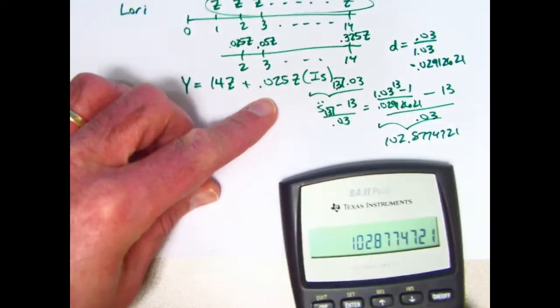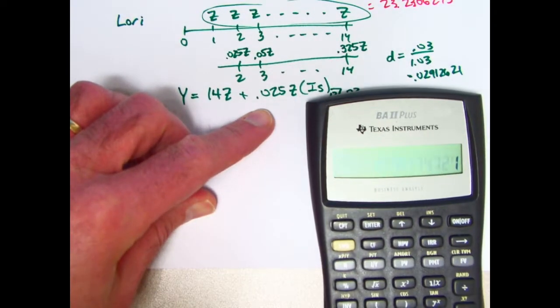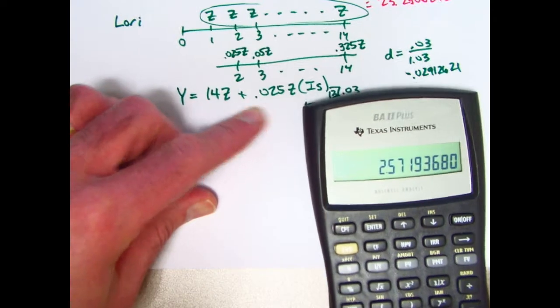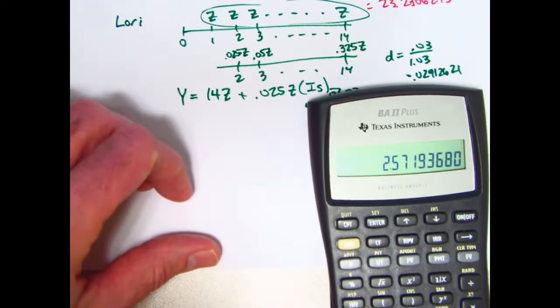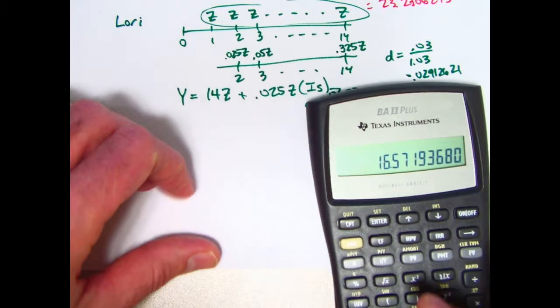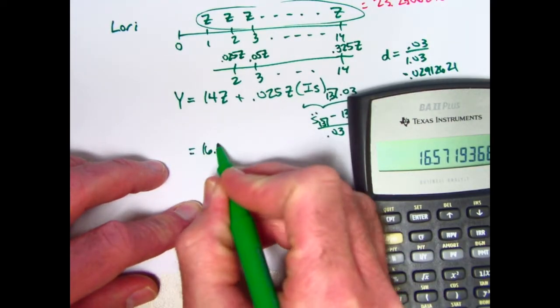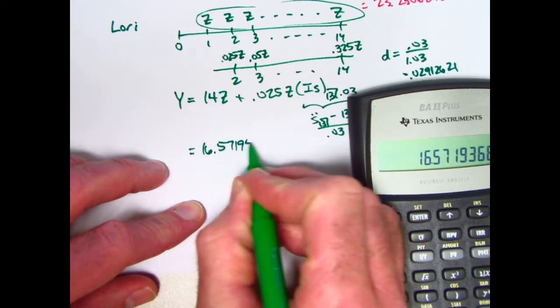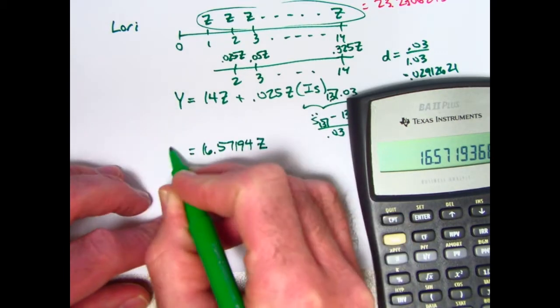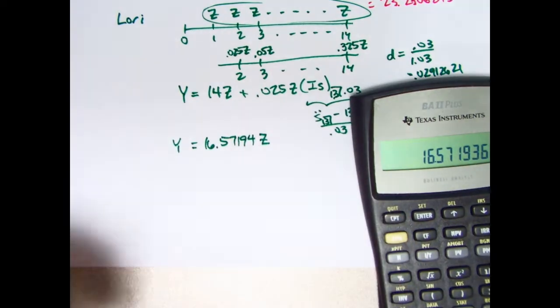That now has to get multiplied by 0.025, and then you need to add 14 to it. Looks like what we have in the end is 16.57194 times Z. That's what Y is.